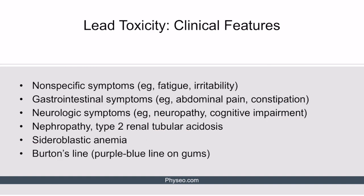The clinical features of lead toxicity are broad, which can make the diagnosis challenging. Some patients present with only nonspecific symptoms such as fatigue, irritability, or GI symptoms like abdominal pain or constipation. Others may present with more serious symptoms such as sensory or motor neuropathy, or cognitive impairment manifesting as forgetfulness in adults or neurodevelopmental delay in children. Peripheral neuropathy secondary to lead toxicity often manifests as foot drop, wrist drop, or sensory neuropathy in the stocking-glove distribution.